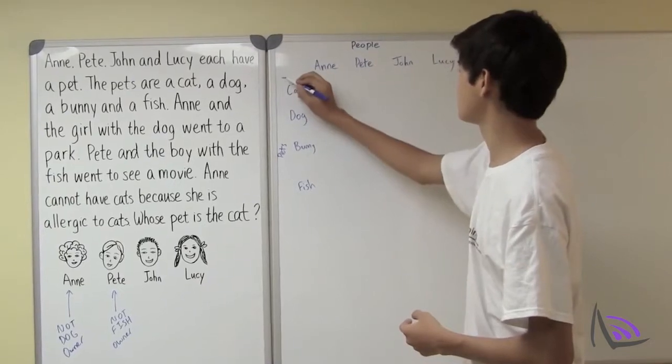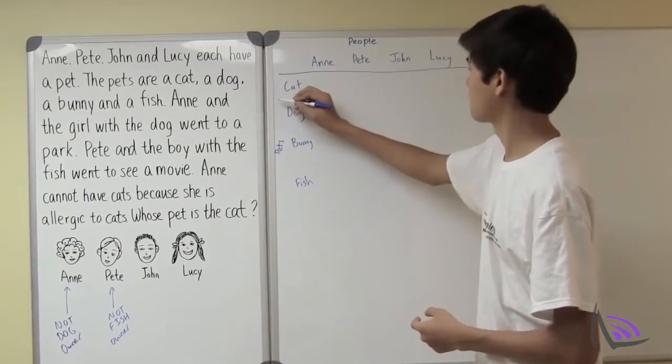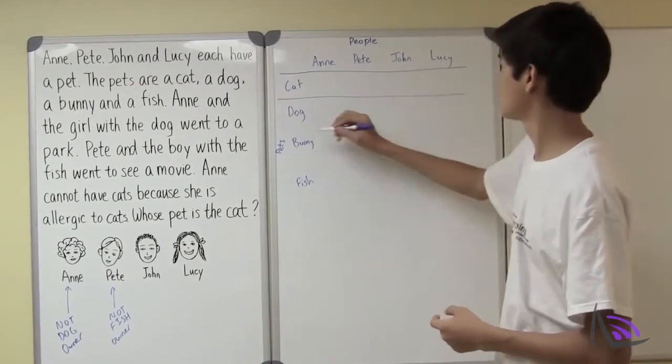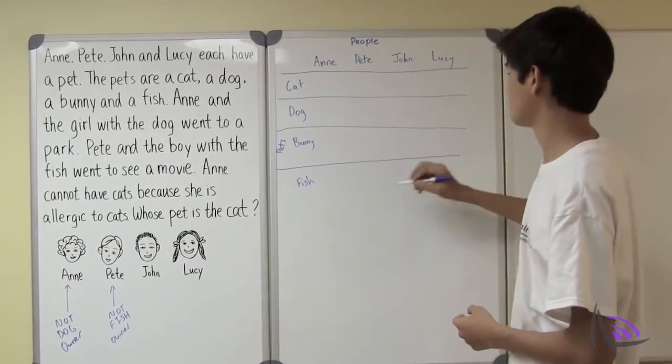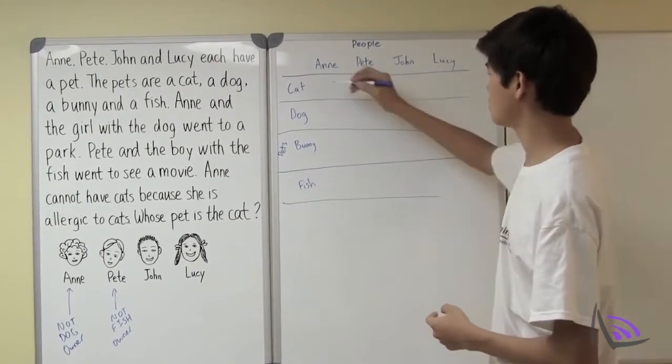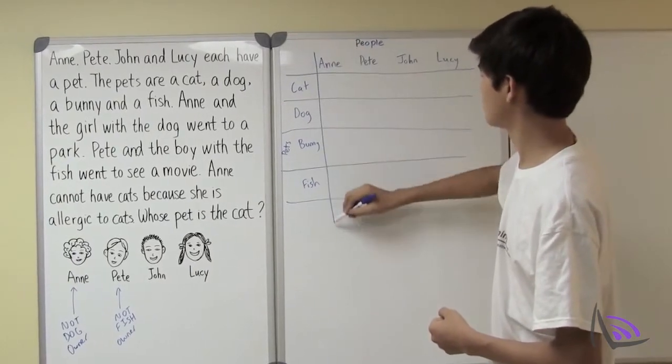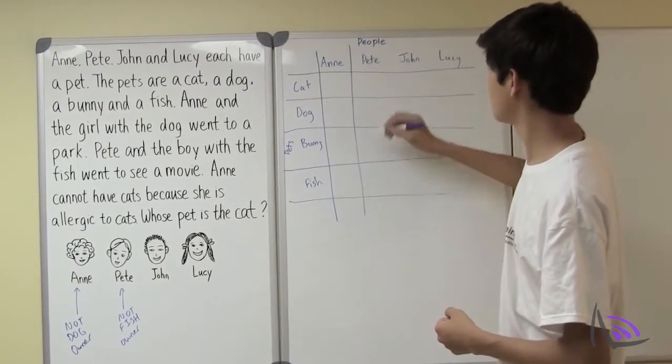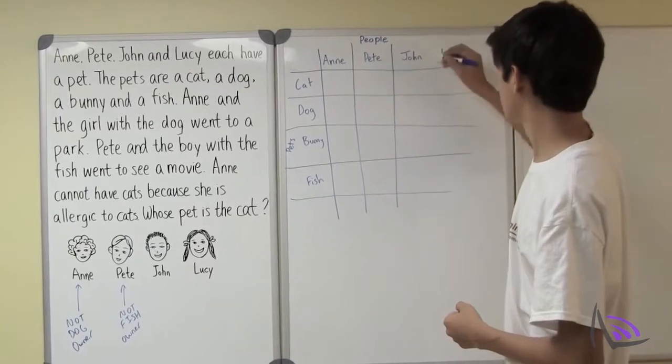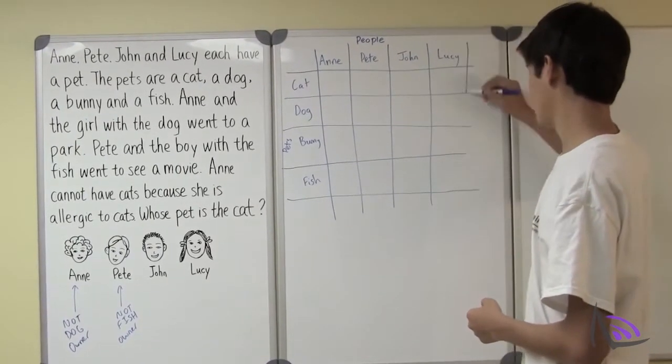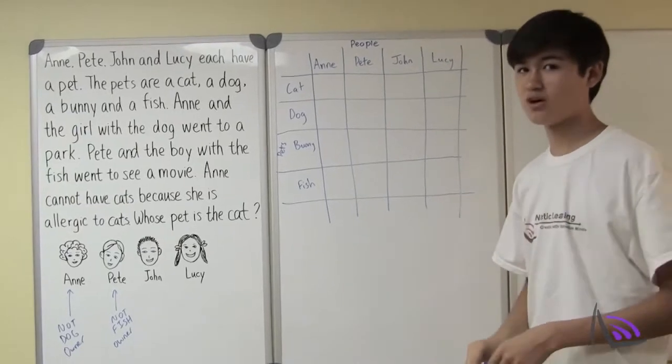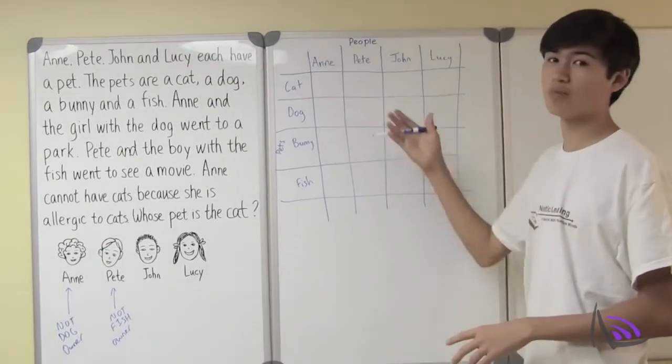Now we can make a table out of this. So each square will represent whether or not they are an owner pet parent.